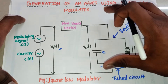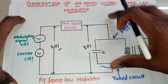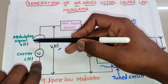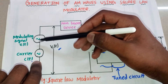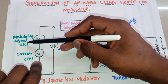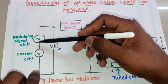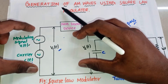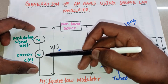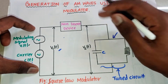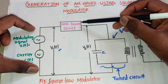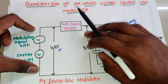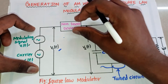In the square law modulator, we have mainly four types of blocks or four parts. First one is the message signal, also called the modulating signal — X(t). In series with X(t), the carrier signal C(t) is connected. The combination of X(t) and C(t) is given as the input to the non-linear device, which is a diode or any other transistor.